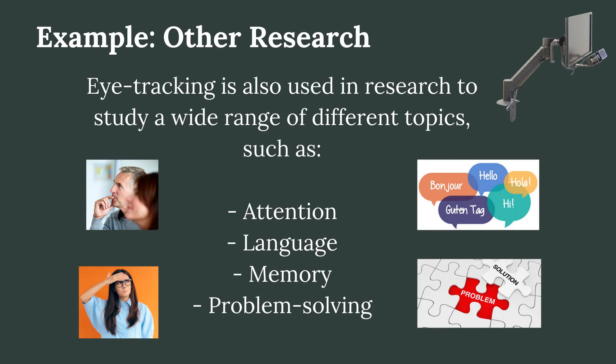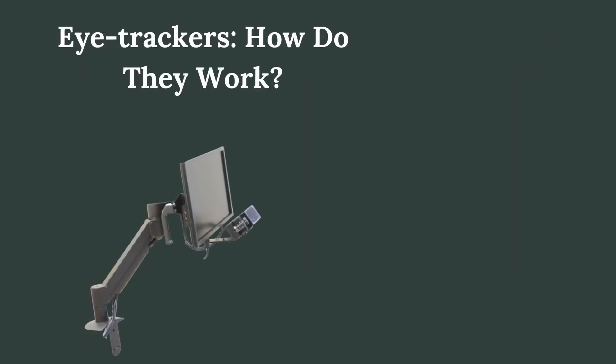So, how do eye trackers actually work? Well, there are a few different types of eye trackers and they can work in a few different ways. One type of eye tracker that is commonly used in research works by following eye positions and eye movements using infrared light. Specifically, an eye tracking device will illuminate the pupil using infrared light.